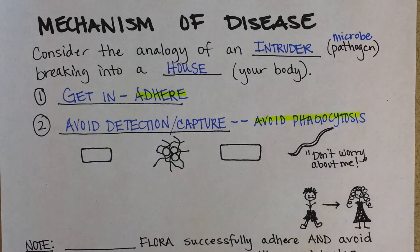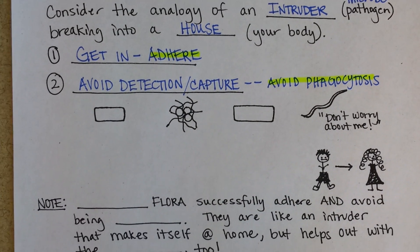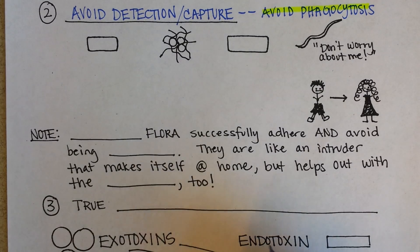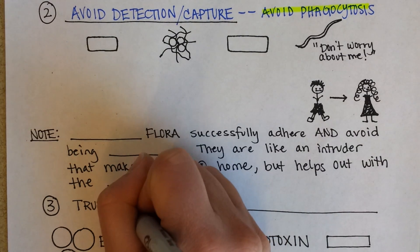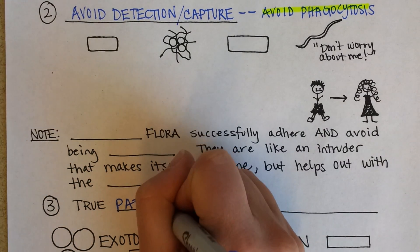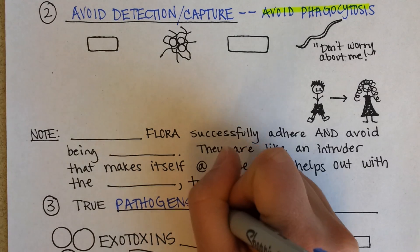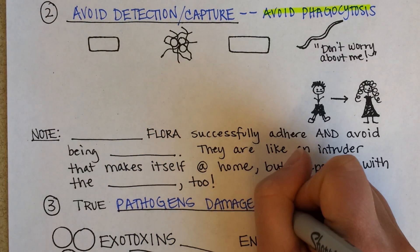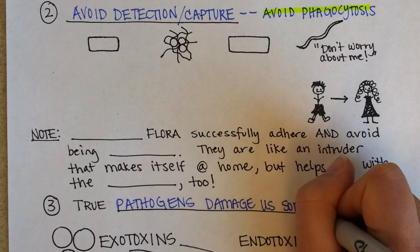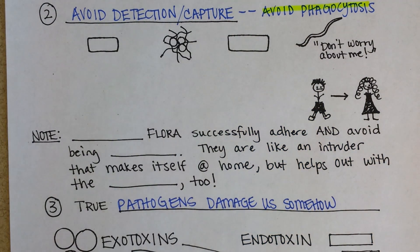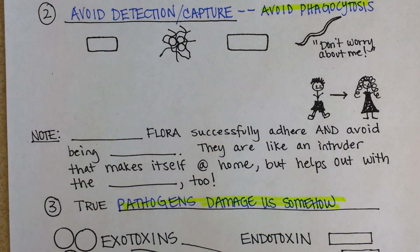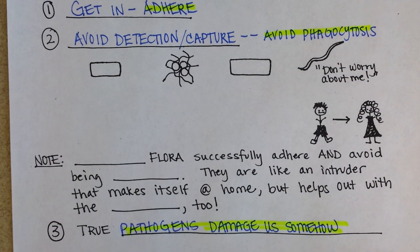So in order for bacteria to really make us sick, the third requirement is that true pathogens damage us somehow. Those are the three ingredients for a pathogen making us ill. Now we'll go back up to the top and flesh some of these out.